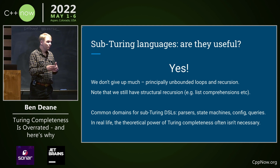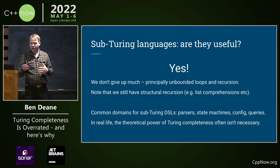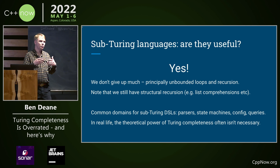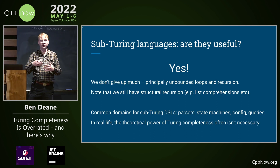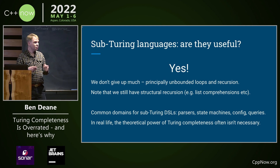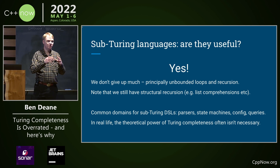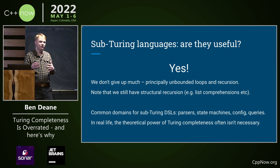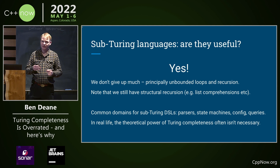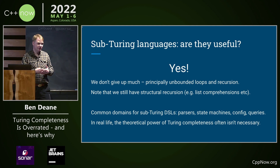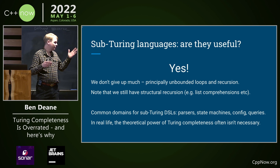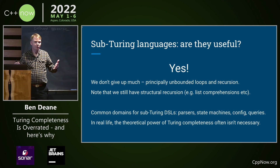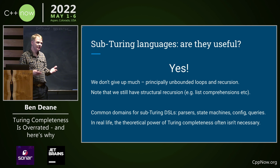With sub-Turing languages, they're actually quite useful — you're not giving up a whole lot. You're giving up principally the inconsistency: the ability to make unbounded recursion and unbounded loops. You still get structural recursion, you still get types, you still get things like list comprehensions. And there are a lot of common domains that sub-Turing languages can handle very nicely: parsers, state machines, config, query languages. So the theoretical power that is Turing completeness often isn't necessary.